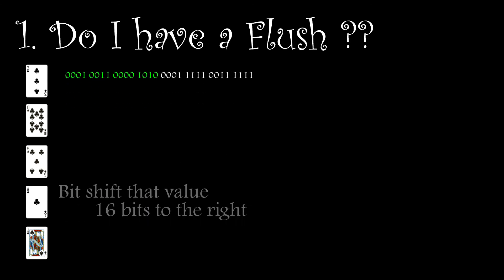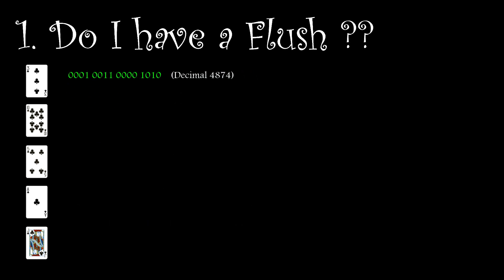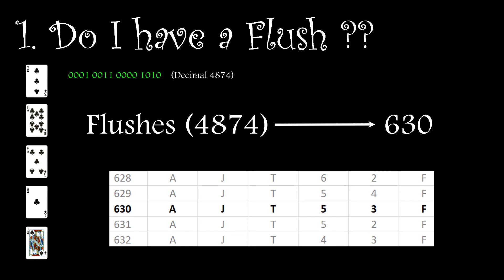This gives us our array index and we can retrieve our hand ranking from that row. Double checking it against our original table we find that we do indeed have the correct cards and hand ranking.